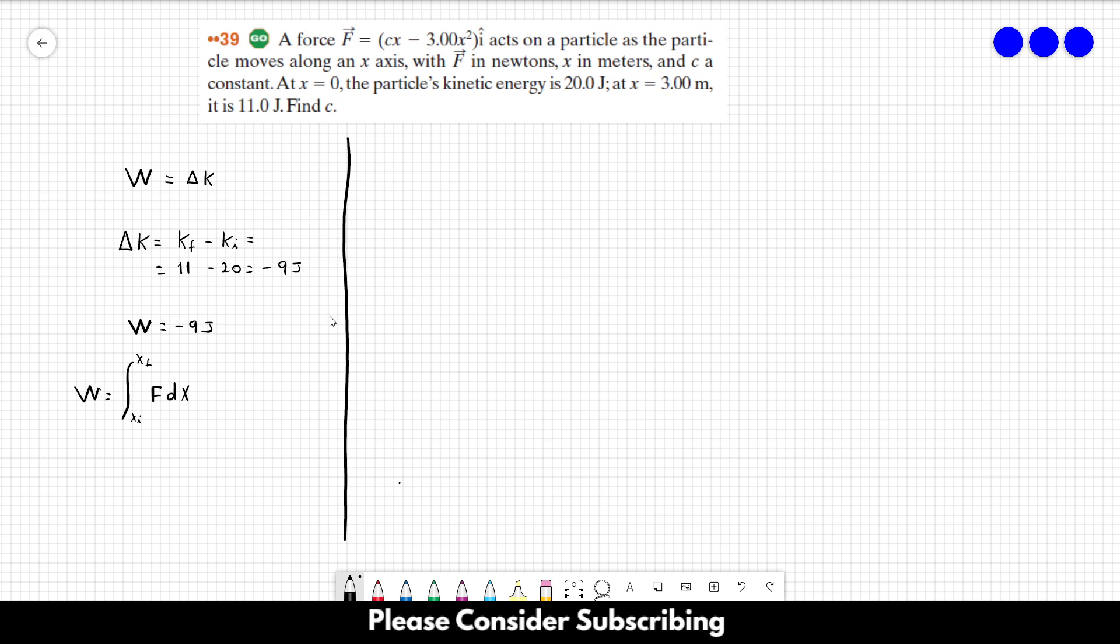So solving this equation, we have that the work is equal to the integral from the initial position, which is 0, to the final position, which is 3, of F equals Cx minus 3x squared dx. Just notice that this is a vector, but in principle, this equation has the dot product.